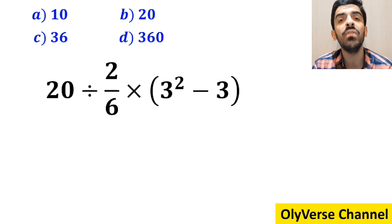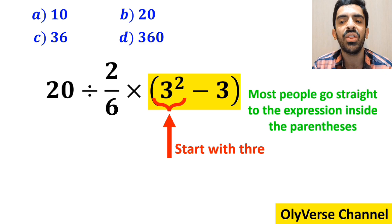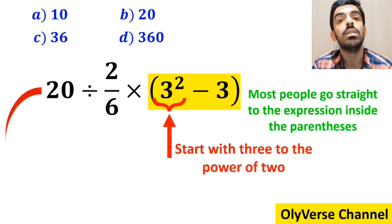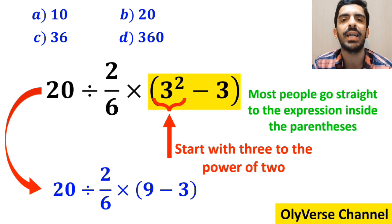And the first step of solving this question, most people go straight to the expression inside the parenthesis and start with 3 to the power of 2. So, instead of the original expression, they write 20 divided by 2 over 6 multiplied by 9 minus 3 inside the parenthesis.